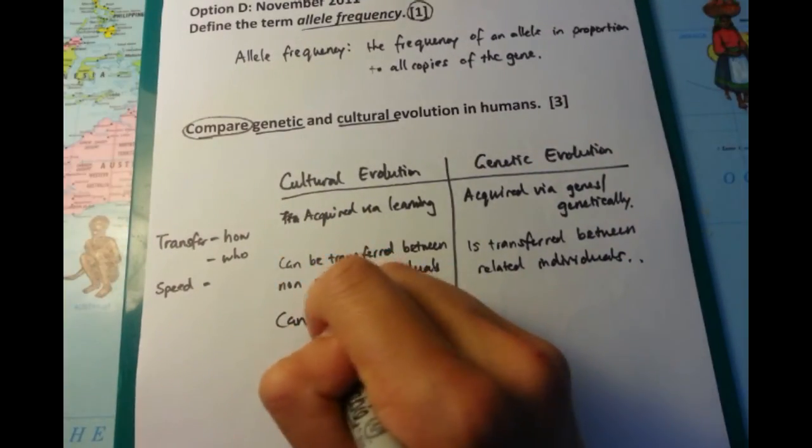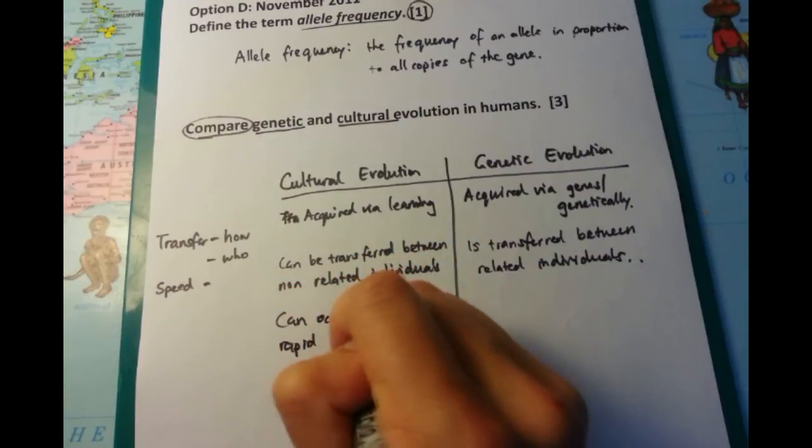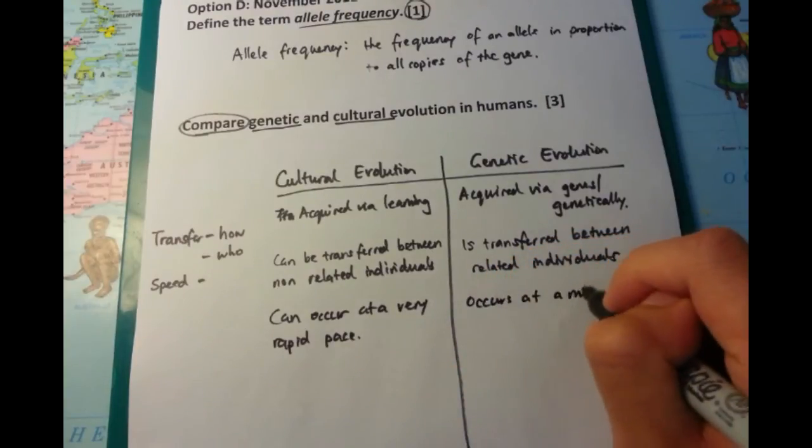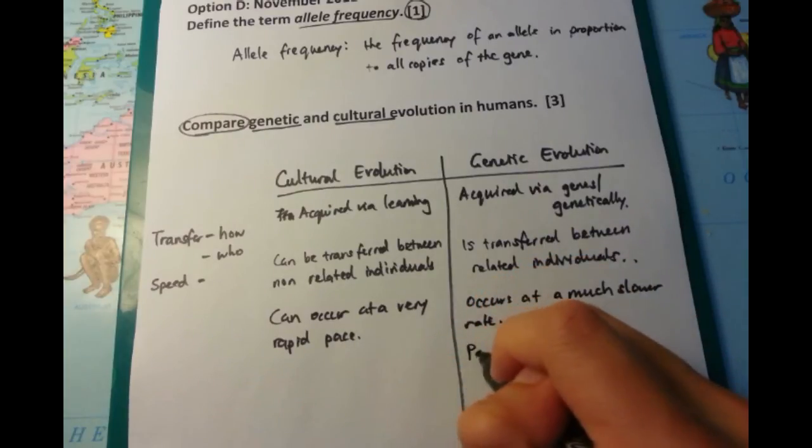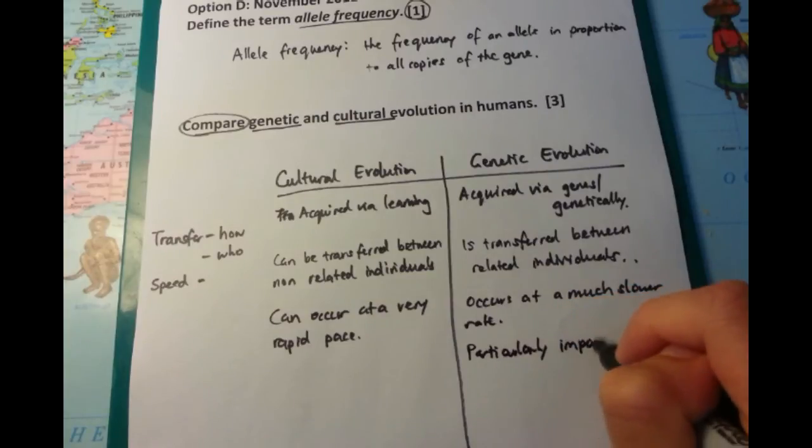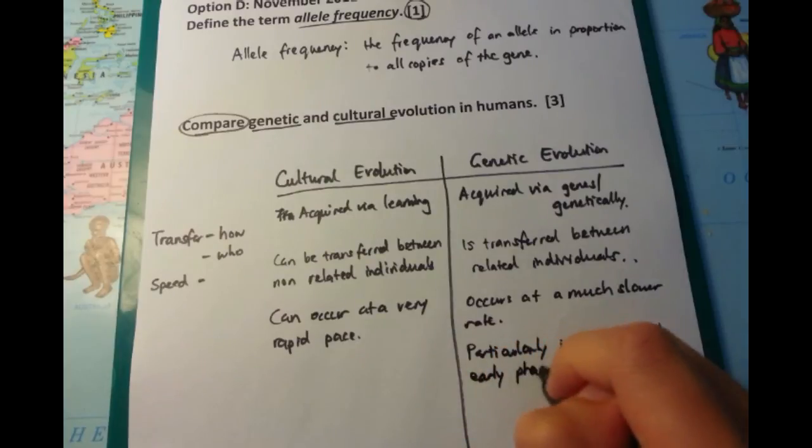Third point now: the speed. Cultural evolution occurs at a very rapid pace, and genetic evolution occurs at a much slower rate. This is evidenced by the fact that the dinosaurs died out 65 million years ago, and it took a long time for any evolution to really occur—millions of years. This is as opposed to cultural evolution, where cultural changes can occur in hundreds or thousands of years.